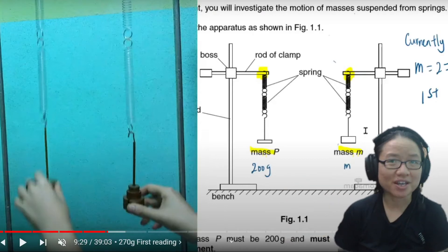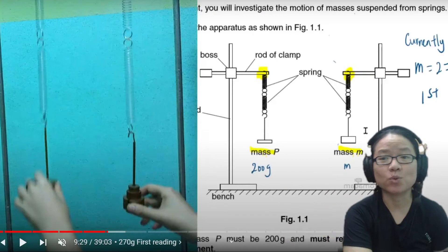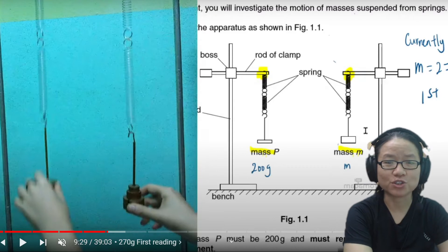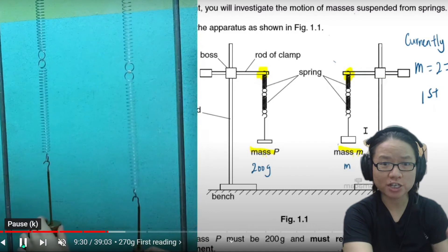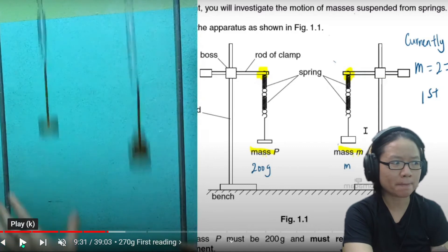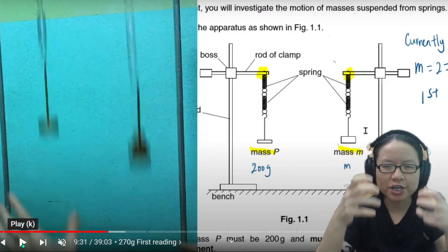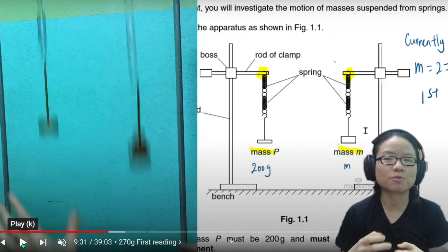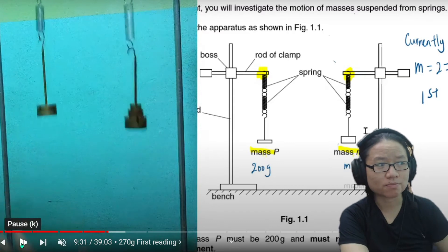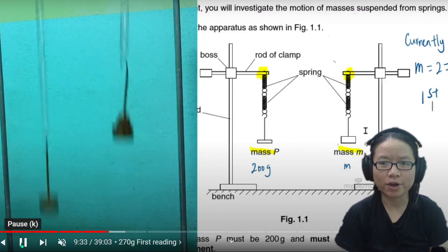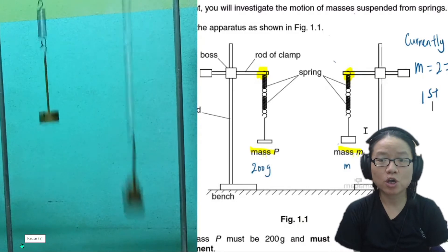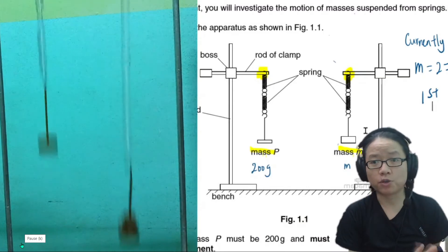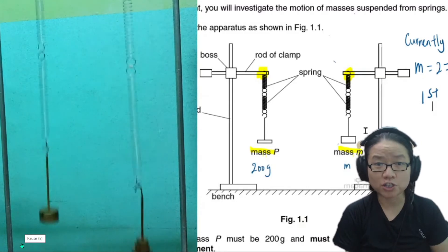Springs — this is what we're going to look at today: work done and elastic potential energy. You will hopefully be doing this lab. You can see as I stretch the spring, I am storing energy in that spring. And what happens when I store energy? The spring will boing — it will bounce up and down.